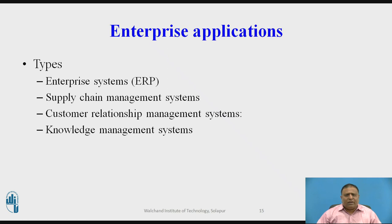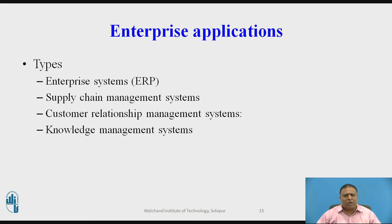The next topic is enterprise applications, which include all levels of management, execute business processes across the firm, and span functional areas. There are different types of enterprise applications: the first is the enterprise system — ERP, or enterprise resource planning; the second is the supply chain management system; the third is the customer relationship management system; and the fourth is the knowledge management system.